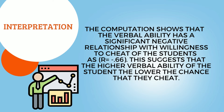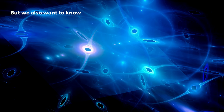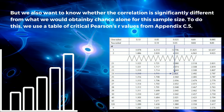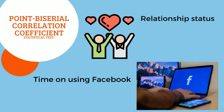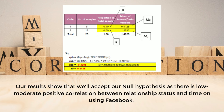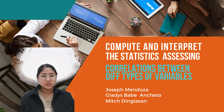We also want to know whether the correlation is significantly different from what could be obtained by chance alone for the sample size. To do this, we use the table of critical Pearson's R values from Appendix C.5, looking at the degrees of freedom and the criterion level. Although the relationship is statistically significant and strong, it does not mean that verbal ability causes people to cheat or that everyone with low verbal ability will cheat. For the point-biserial test on relationship status and Facebook time, results show a low-to-moderate positive correlation that is not statistically significant.